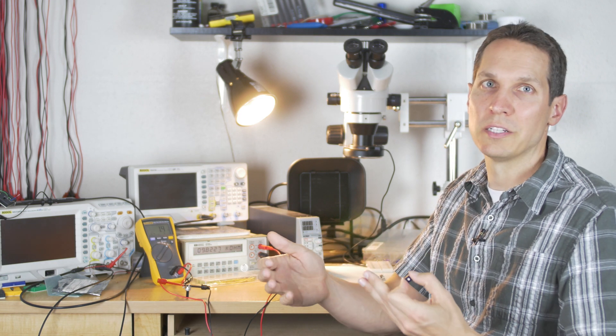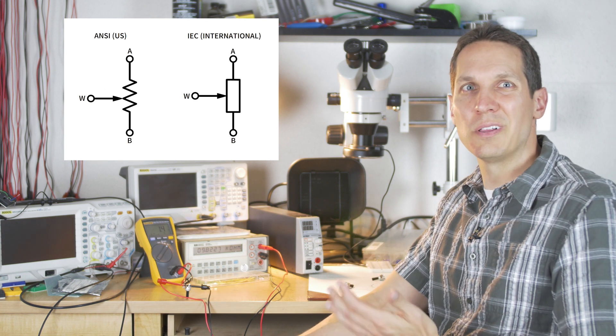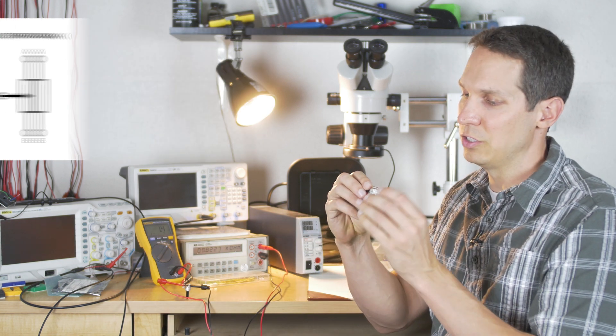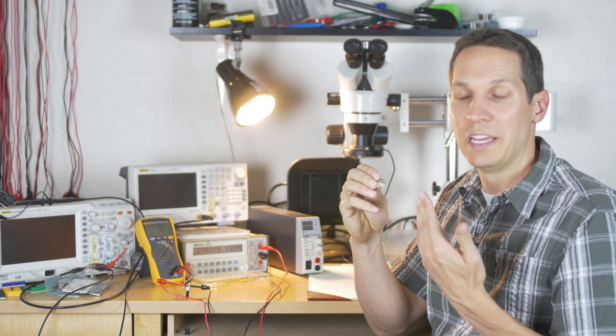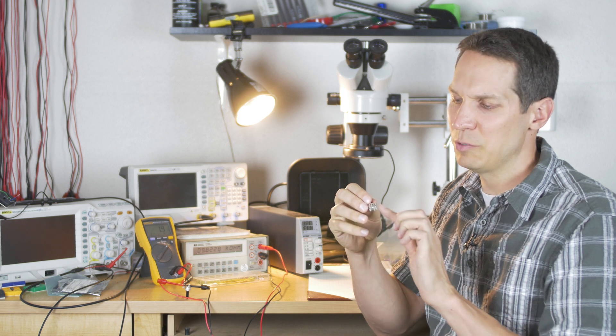There are a couple of different symbols that are used, but all of them have three connection points. I'm going to use this slightly larger potentiometer as a good example. You typically have an input, an output, and then a wiper, and they can be in different areas.